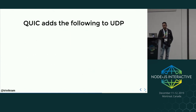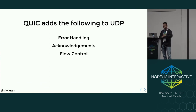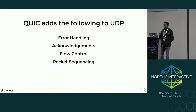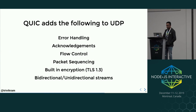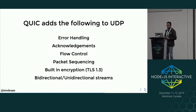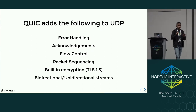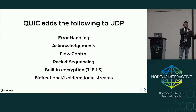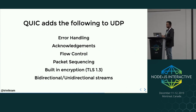QUIC adds the following to UDP: error handling, acknowledgement, flow control, packet sequencing, built-in encryption with TLS 1.3, and bidirectional and unidirectional streams. So whatever benefits you have from TCP, those features come to QUIC as well.